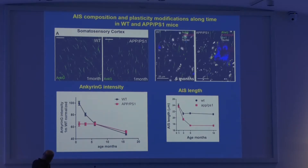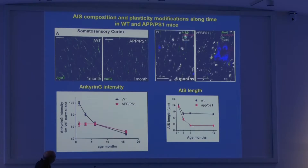When you look at the length of the axon initial segment — remember we were talking about plasticity — in wild type there is a reduction that comes with the plasticity occurring during the first months. But in the APP mice you see a further decrease. Electrophysiology experiments confirm this is affecting the properties of neuronal firing. You can see axon bands and how axon initial segments are shorter and have less AnkyrinG. You can also see a beta-amyloid plaque and how the surrounding axon initial segments are shorter.